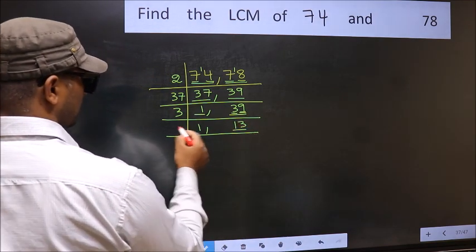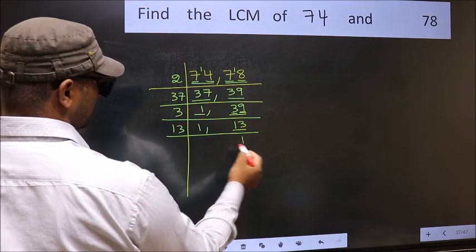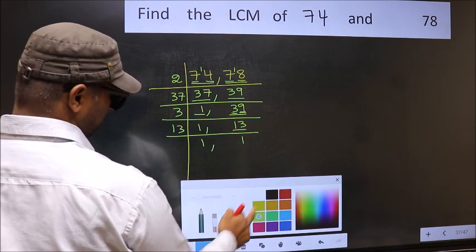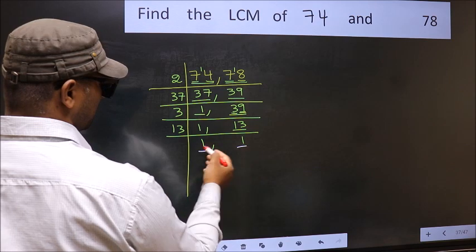Now we have 13. 13 is the prime number, so 13, 1 is 13. So we got 1 in both the places.